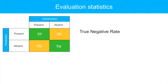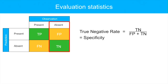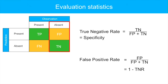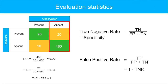The true negative rate refers to the proportion of observed absences that are correctly predicted, calculated as the number of true negatives divided by the sum of false positives and true negatives. The true negative rate is also referred to as specificity, and a high value indicates good model performance. In this example, we find a true negative rate of 0.96 and a false positive rate of 0.04, indicating that 96% of observed absences are correctly predicted. You can check whether this prediction is statistically significant by testing whether the true positive or negative rates are higher than would be expected by chance.